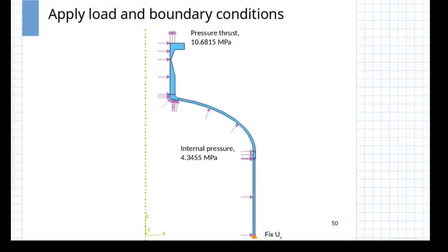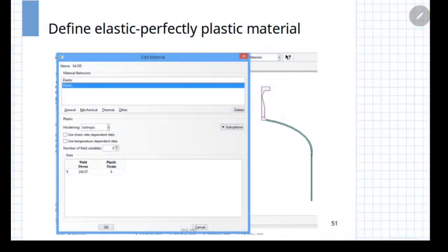We will illustrate this method by using the same problem that we solved previously using the elastic analysis. So the model as well as the boundary conditions remain the same. The difference comes in terms of the definition of the material as elastic perfectly plastic material. In this case, the analysis is done using the Abaqus platform, so the interface or GUI you will find little different.